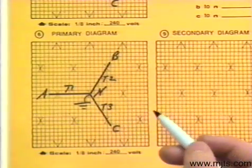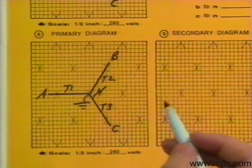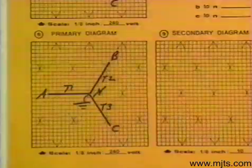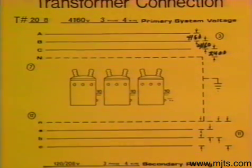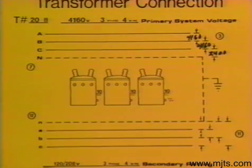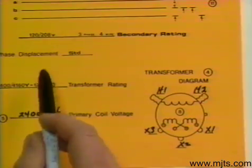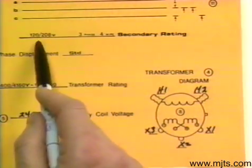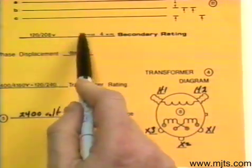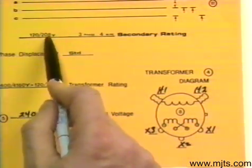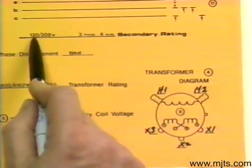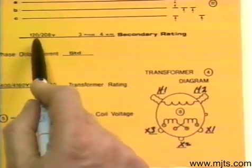Step seven will be left out until a later time — we'll skip it and go on to step eight. On the low side, the secondary rating we want is 120/208, 3-phase 4-wire. Those numbers tell us what kind of connection we need: 120 to 208 means we want a Y connection on the low side.